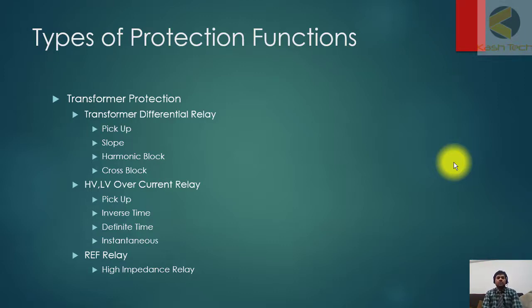Another relay installed on the transformer protection is HV and LV over current protection, which has functions like pick-up, inverse time, definite time, and instantaneous. Another relay installed on the transformer is restricted earth fault, called REF relay. REF can be two types: high impedance and low impedance REF.